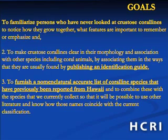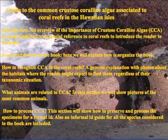We have also almost completed an accurate nomenclatural list of coralline species previously reported from Hawaii, to be combined with the species we are currently collecting, so it will be possible to use other literature to see how those names coincide with the current classification. This is a larger goal: to put in order all the coralline names in the Hawaiian archipelago. The list is around 70 species, but the guide will only cover the common ones — selected based on being common across the four main islands in shallow water.